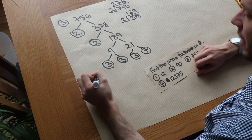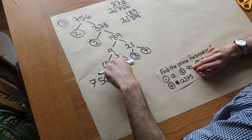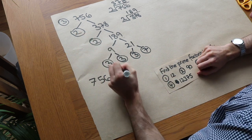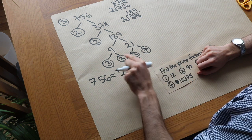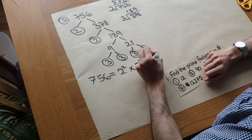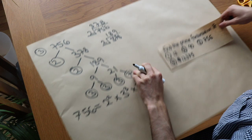So that means 756 can be written as the product of all these numbers here. So how many 2's we got? We've got 1, 2. So we could write that as 2 squared. How many 3's we got? We've got 1, 2, 3. So that's 3 cubed. And then we've got this lone 7. So we don't need to write 7 to the 1. We just write 7.